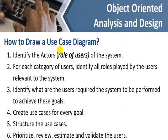So how do we draw a use case diagram? First, identify the actors — who are going to access the system and get its functionality. For each category of users, identify all roles played by the users relevant to the system. One user can play many roles; for example, a teacher can have many functionalities in their module. Similarly, a student can view results, add a course, or drop a course — all these must be known in advance. Third, identify what the users require the system to perform to achieve these goals.